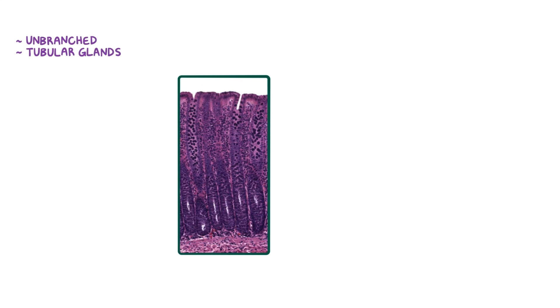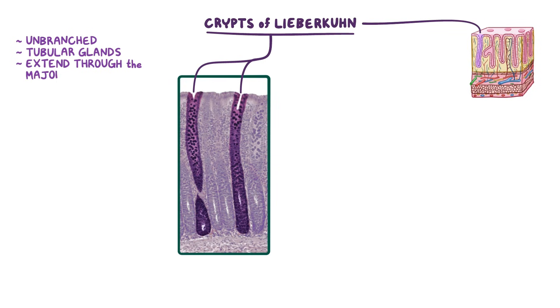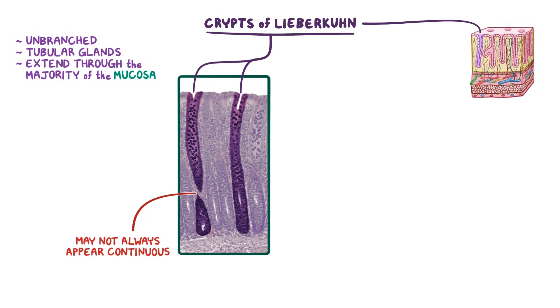The surface epithelium is continuous with straight, unbranched, tubular glands called the crypts of Lieberkühn. Unlike the crypts in the small intestine, these crypts extend through the majority of the mucosa, from their openings at the intestinal surface all the way to the muscularis mucosa along the deepest portion of the overall mucosa. It may not always appear to be continuous on histological slides, because the path of the crypts may not always travel along the same plane as the section of tissue taken from the colon.